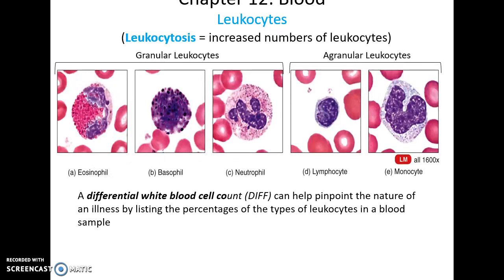These are the five main leukocytes found in the blood. Often when you get a blood sample taken, they will count the different kinds of white blood cells to see if there are any issues. For instance, if you are having a lot of allergies, you might have an increased number of basophils. Leukocytosis basically means an increase in the number of leukocytes, which could indicate a specific condition based on what's going on with your body.